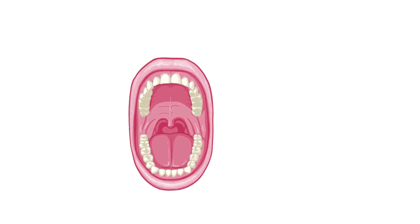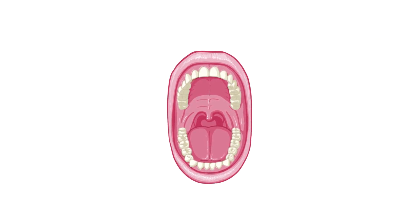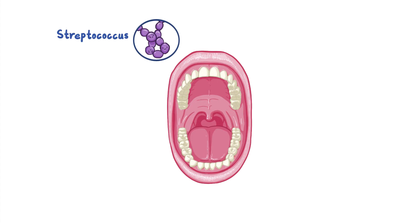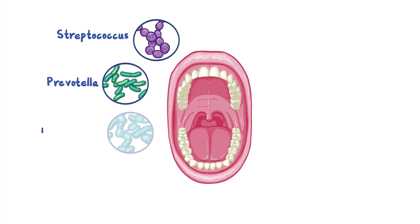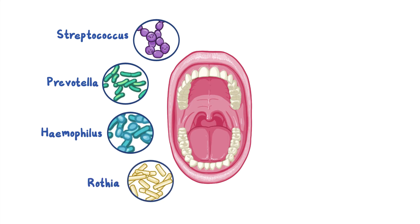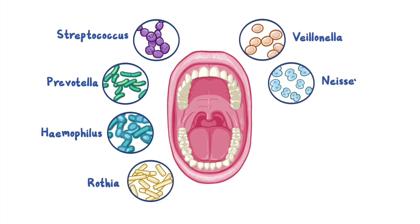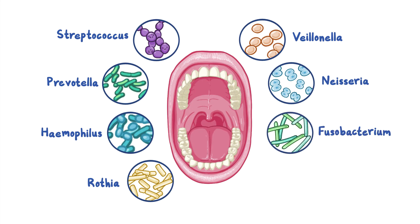The major genera with the largest representation in oral cavities include Streptococcus, Prevotella, Haemophilus, Rothia, Veillonella, Neisseria, Fusobacterium and Porphyromonas.